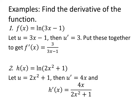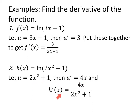Let's find the derivative. If F of X is the natural log of 3X minus 1, we let U equal 3X minus 1, whose derivative is 3. So the derivative of the natural log of 3X minus 1 is the derivative of 3X minus 1, which is 3, divided by 3X minus 1. If H of X is the natural log of 2X squared plus 1, let U be 2X squared plus 1, whose derivative is 4X. The derivative is 4X divided by 2X squared plus 1 — derivative of the inside divided by the inside.